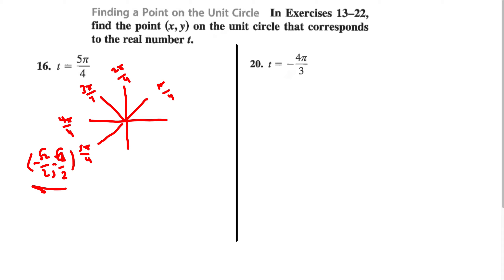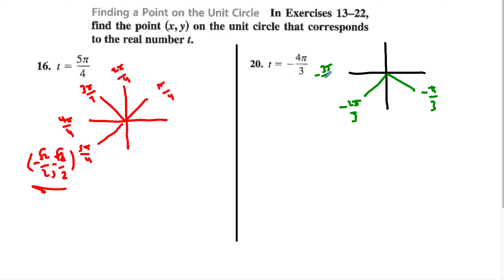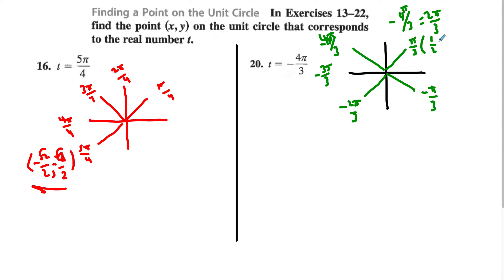For negative 4π/3, there are a couple of ways to approach this. Because it's negative, we count in the clockwise direction. Alternatively, negative 4π/3 is the same as 2π/3, which means it corresponds to π/3 — which we know to be (1/2, √3/2) — except it's in the second quadrant. So the x will be negative, giving us (−1/2, √3/2).